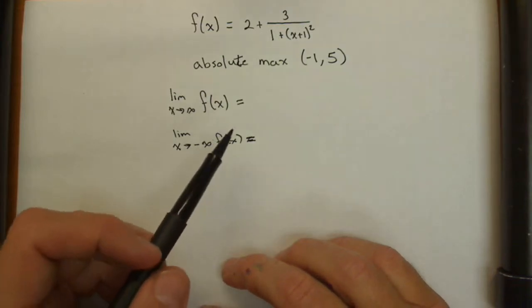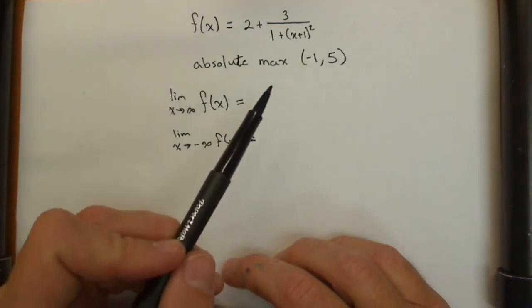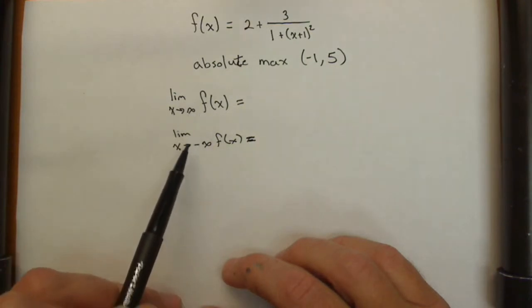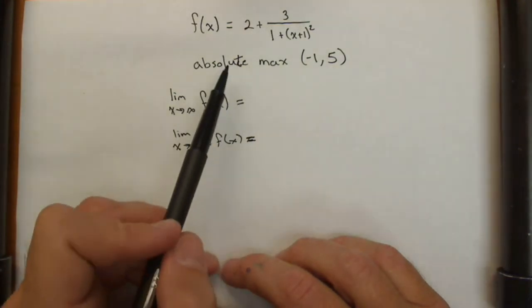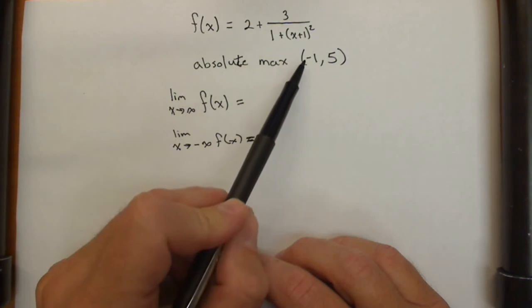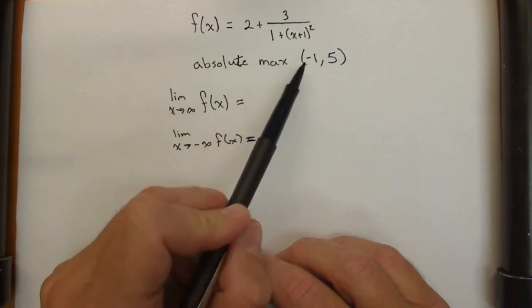For preview activity part D, we're going to be looking at the limits as x approaches positive and negative infinity. Now we found that it had a critical value at -1 and therefore had an absolute max.